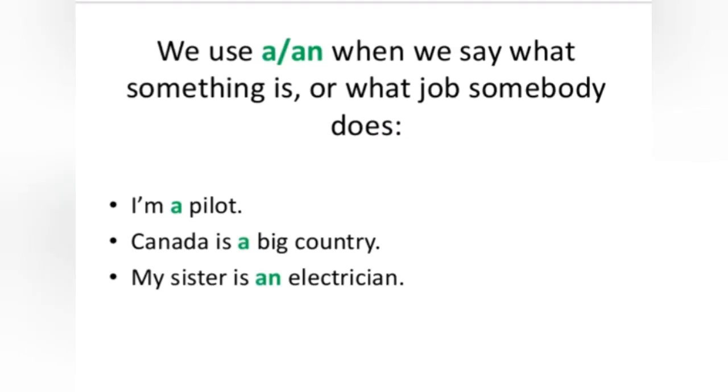We use a or an when we say what something is or what job somebody does. For example: I am a pilot, Canada is a big country, my sister is an electrician.